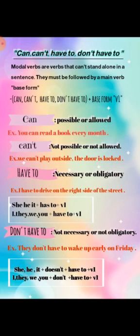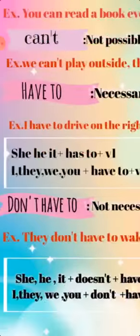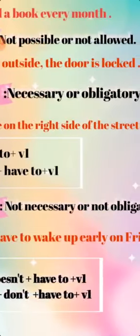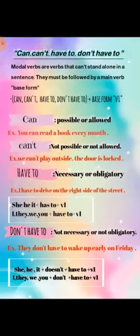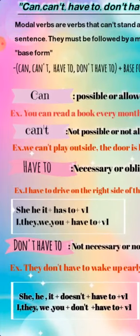'Have to' means necessary or obligatory — something you are required to do. For example, I have to drive on the right side of the street. Note that for singular subjects we use 'has to', for plural we use 'have to'. 'Don't have to' means not necessary or not obligatory — for example, they don't have to wake up early on Friday. And for singular: 'doesn't have to'.